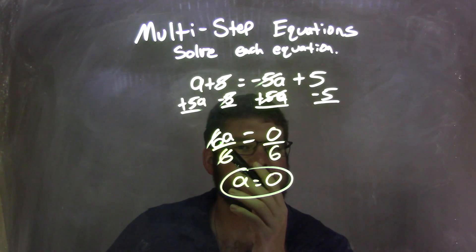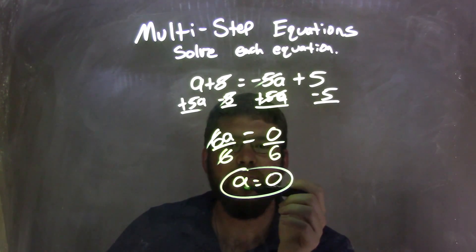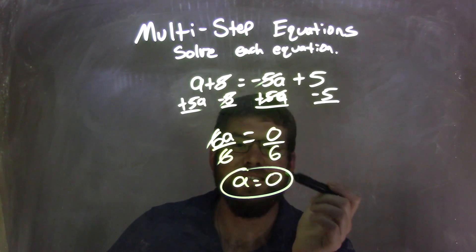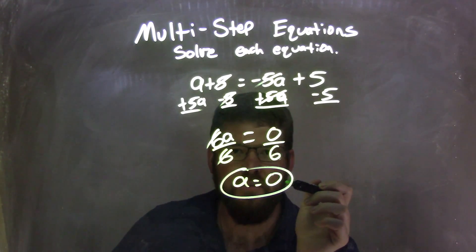Well, then opposite of multiplication is division, so I divide by 6 to both sides. It'll leave me with just this A here. And then A equals, well, 0 divided by 6 is 0. So our final answer is A equals 0.